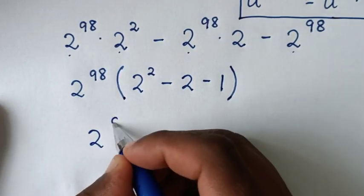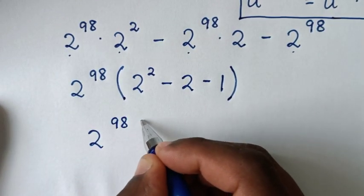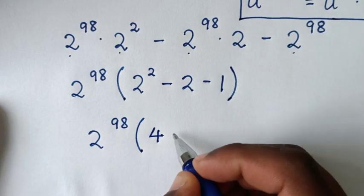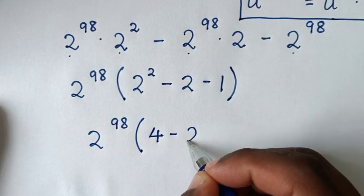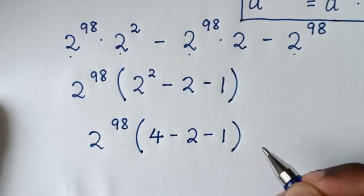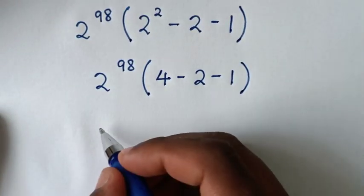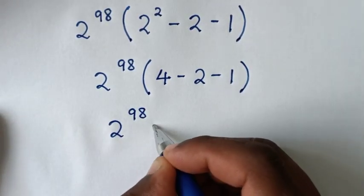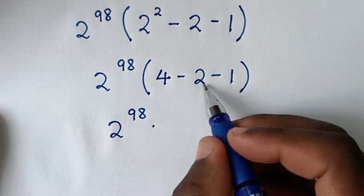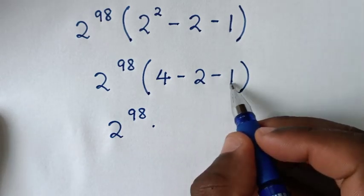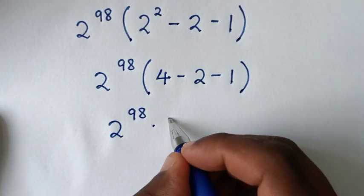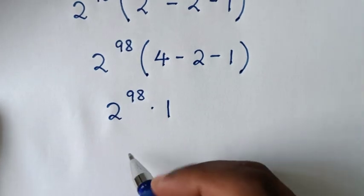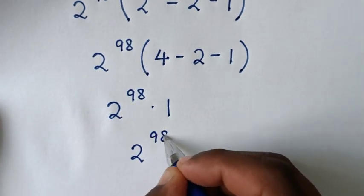So we have 2 power of 98 times the bracket. Inside the bracket: 4 minus 2 is 2, and 2 minus 1 is 1. So it becomes 2 power of 98 times 1, which equals 2 power of 98. Therefore, this is our final answer.